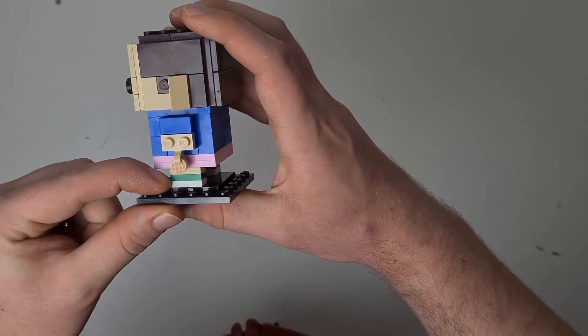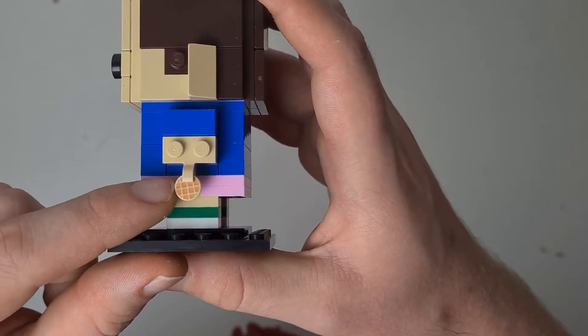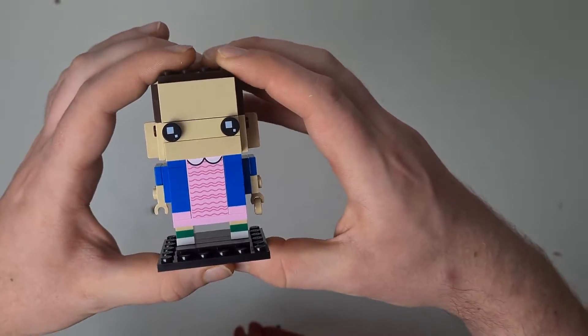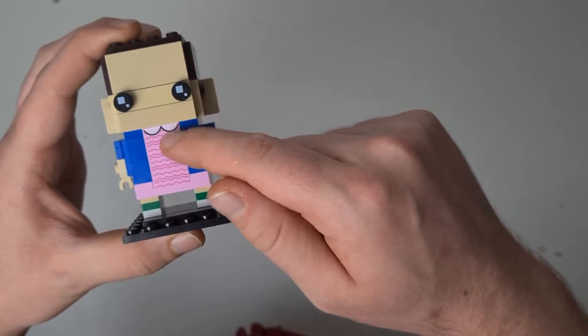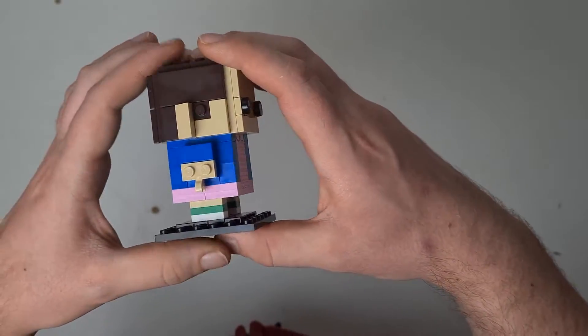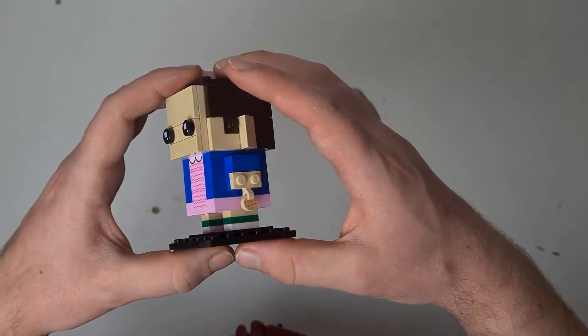So you've got her little socks, the green and white socks. It comes with a little Eggo waffle which is really quite cool. I thought that was the coolest thing about this individual brickhead. Yeah, so you've got her little top from the first season or second season. So yeah, it's quite a cool little brickhead.